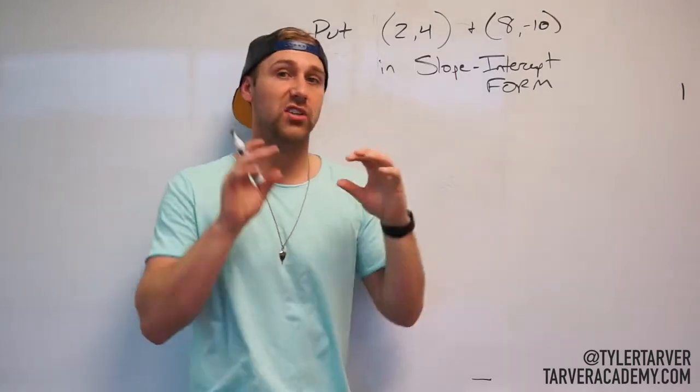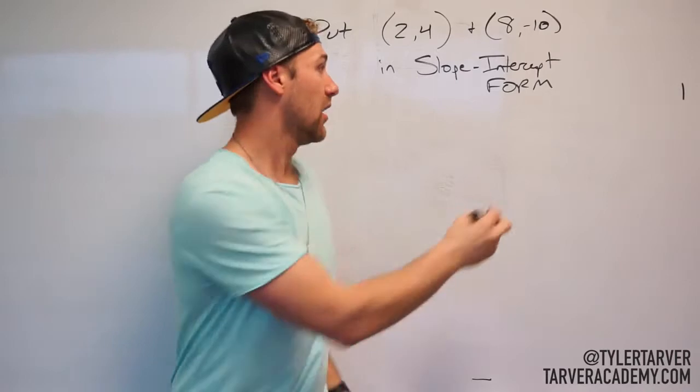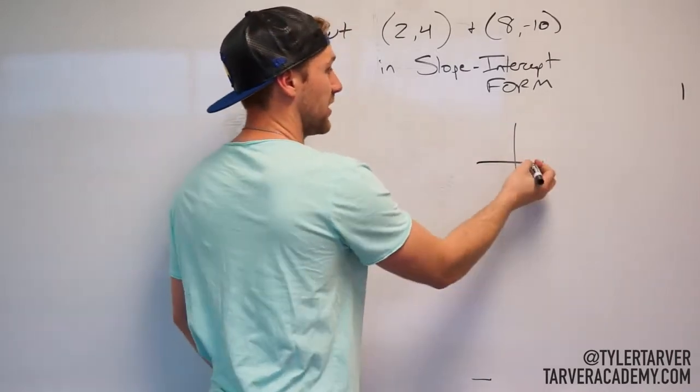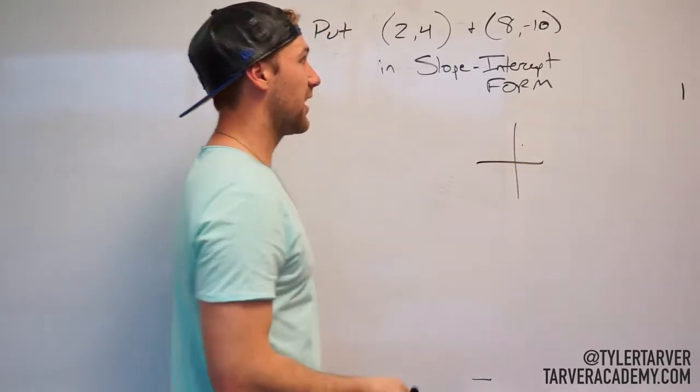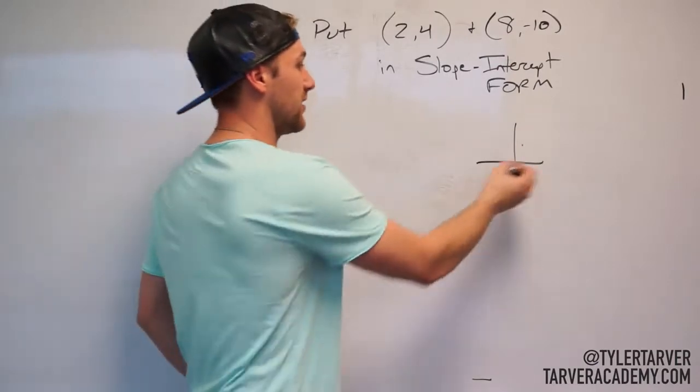So we've got (2,4), that's a coordinate, that means it's a point on a graph, it's a point somewhere, it's (2,4), so it's like right there and then you've got (8,-10), so you go (8,-10).